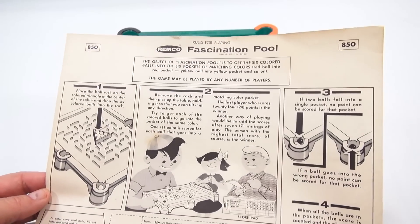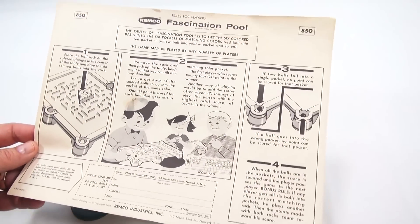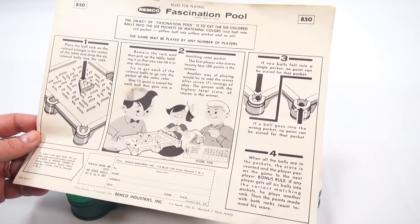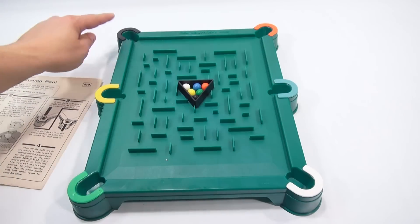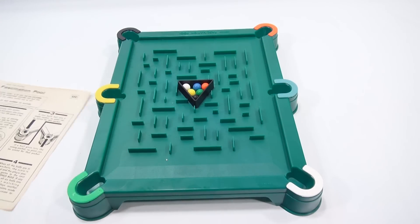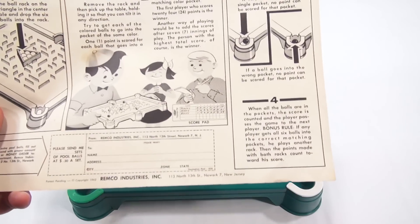Remove the rack and then pick up the table, holding it so that you can tilt it in any direction. Try to get each of the colored balls to go into the pocket of the same color: green, white, yellow, blue, orange, black.